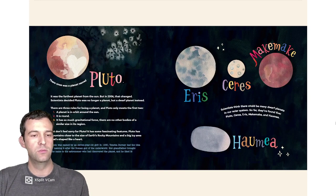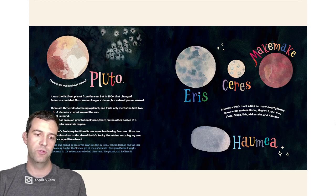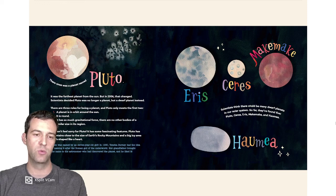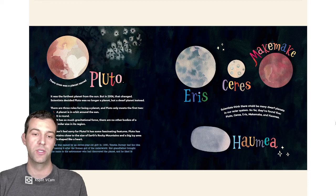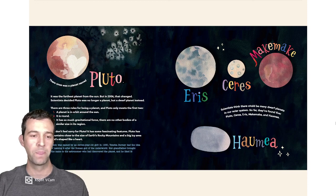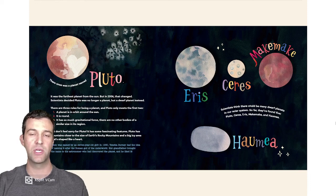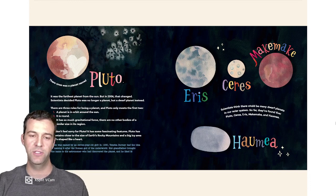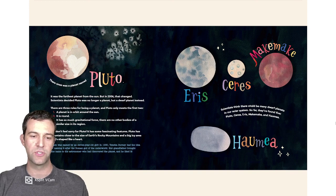Pluto. There was once a planet named Pluto. It was the furthest planet from the sun. But in 2006, that changed. Scientists decided Pluto was no longer a planet, but a dwarf planet instead. There are three rules for being a planet, and Pluto only meets the first two. A planet is in orbit around the sun. It is round. And it has so much gravitational force, there are no other bodies of a similar size in its region. But don't feel sorry for Pluto. It has some fascinating features. Pluto has mountains close to the size of Earth's rocky mountains and a big icy area that's shaped like a heart.